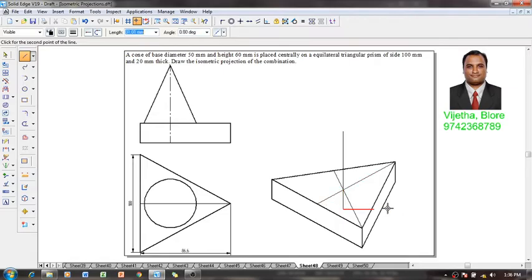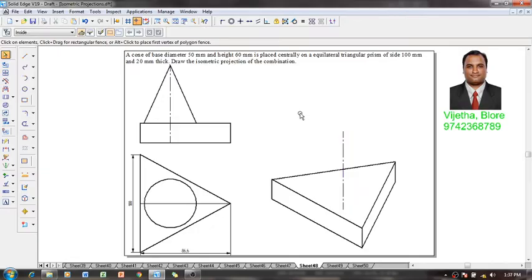This is the axis of the cone and this is the axis of the triangular prism. The axis should be represented in chain line, so we will change the line type to chain line like this.